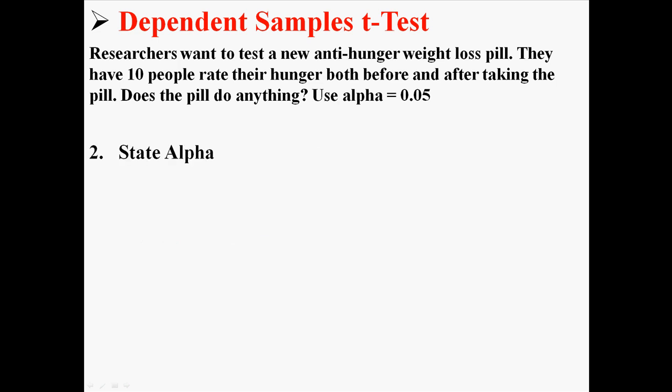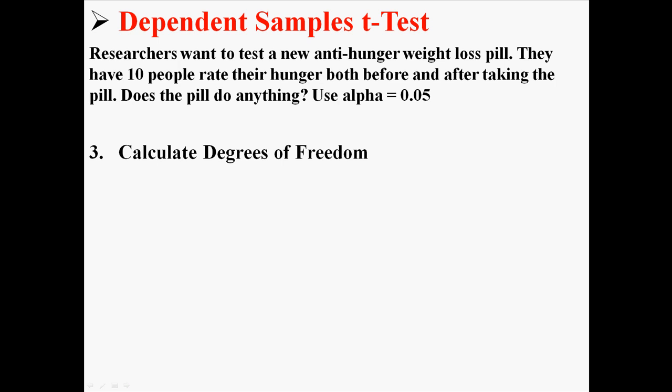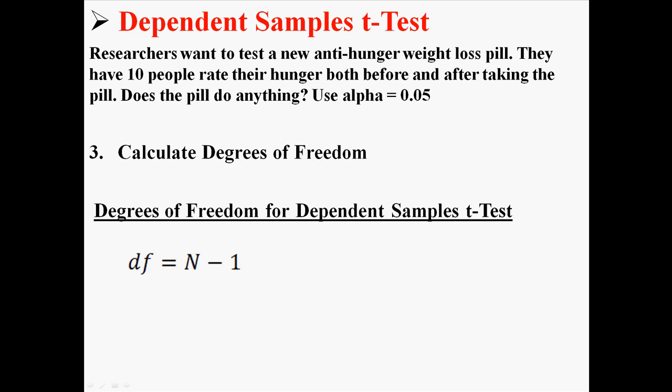Our alpha level is 0.05, which is usually what you will be using. For degrees of freedom in a dependent samples t-test, it's simply N minus 1, where N is the total number of people in your sample. We had 10 people measured before and after, so our degrees of freedom are 10 minus 1, or 9.